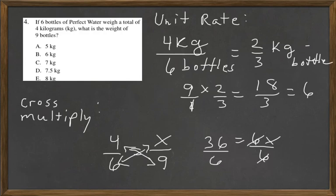And then thirty-six divided by six is six equals x. And sometimes people like to see it the other way, where x equals six. So the answer is B.